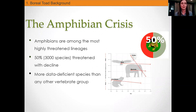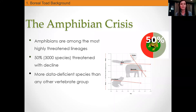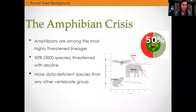What do I mean when I talk about the amphibian crisis? They are actually among the most threatened lineages today. A paper published last year suggested 50% of amphibians are threatened with extinction — that is 3,000 species of the 6,000 we know about. They're actually the most data-deficient group of animals throughout the animal kingdom. Not only are they declining rapidly, there is still so much we don't know. It really highlights why it's so important for programs like this to carry on, because we need to keep gathering data so we can grasp what is happening and what we can do to help prevent these declines.